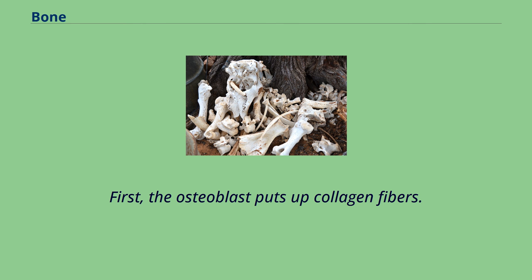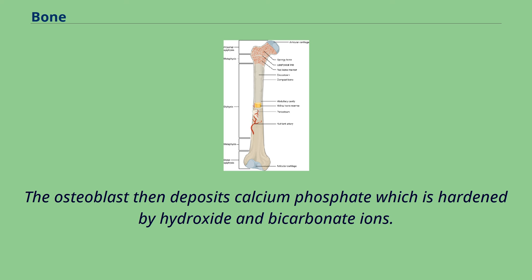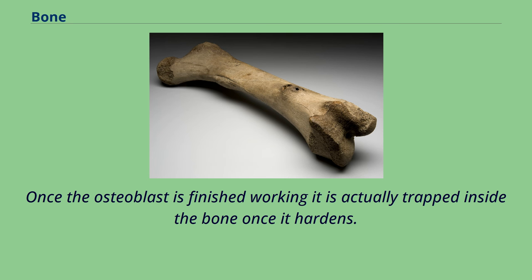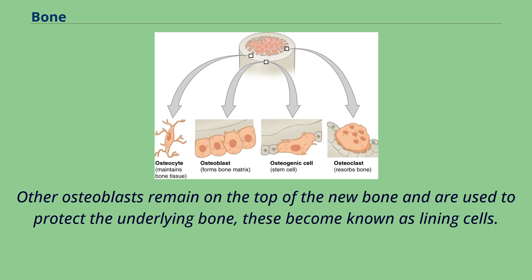First, the osteoblast puts up collagen fibers, which are used as a framework for the osteoblast's work. The osteoblast then deposits calcium phosphate, which is hardened by hydroxide and bicarbonate ions. The brand new bone created by the osteoblast is called osteoid. Once the osteoblast is finished working, it becomes trapped inside the bone as it hardens and becomes known as an osteocyte. Other osteoblasts remain on top of the new bone to protect it, becoming known as lining cells.